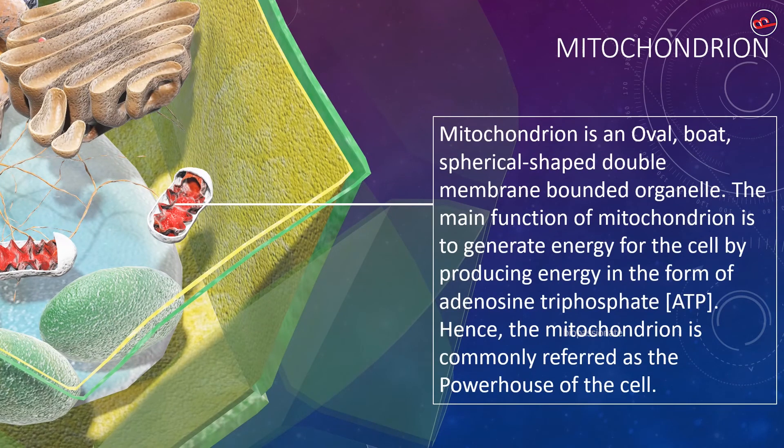Mitochondrion is an oval, rod, spherical-shaped, double-membrane-bound organelle. The main function of mitochondrion is to generate energy for the cell by producing energy in the form of adenosine triphosphate. Hence, the mitochondrion is commonly referred to as the powerhouse of the cell.